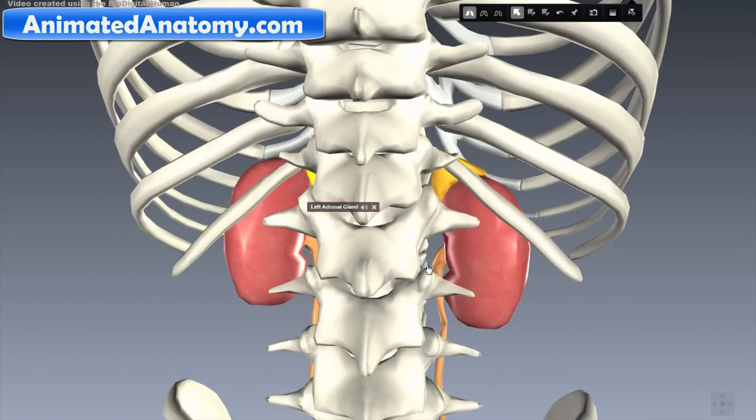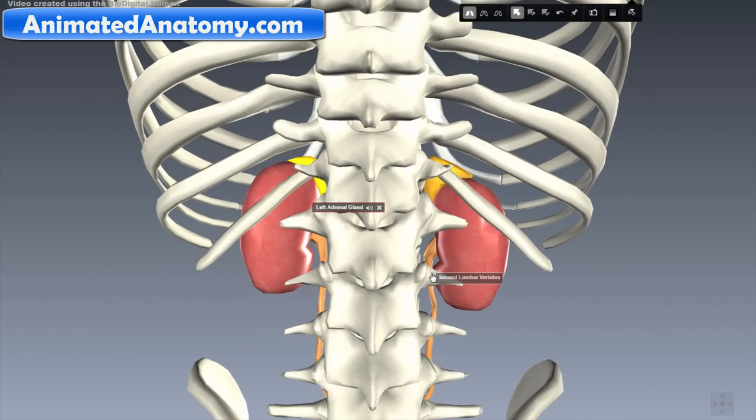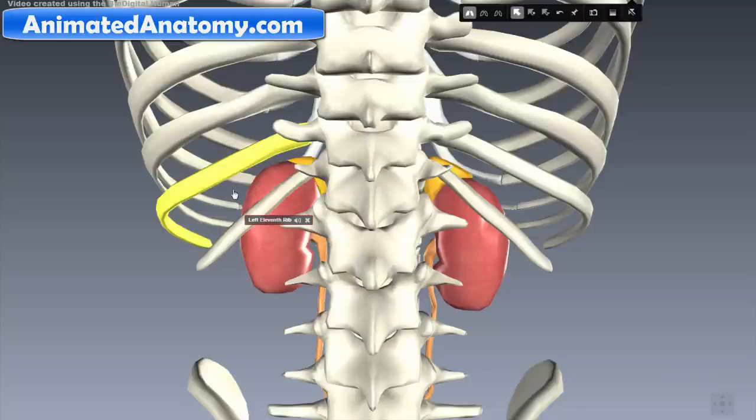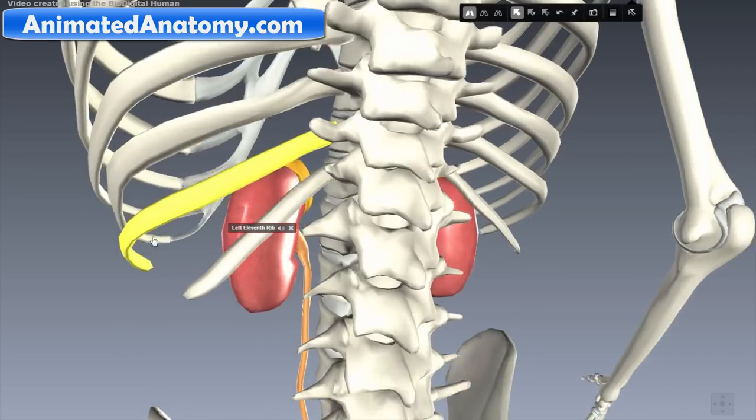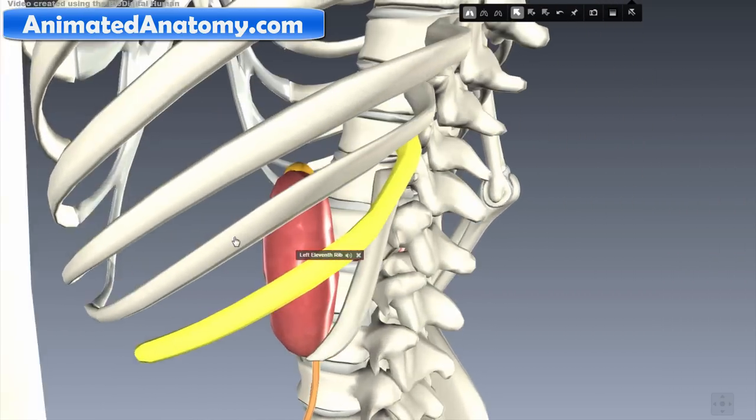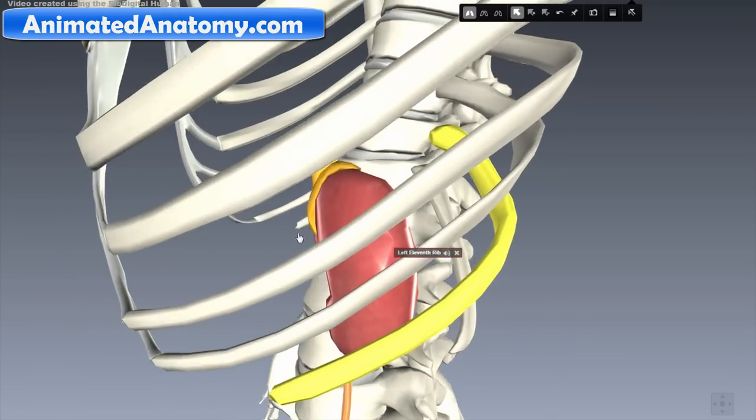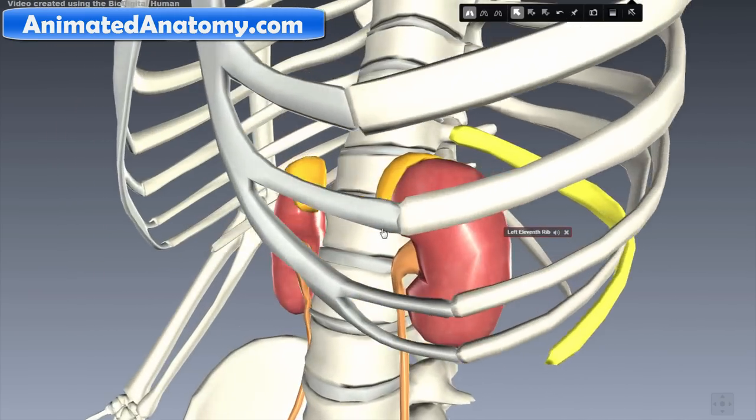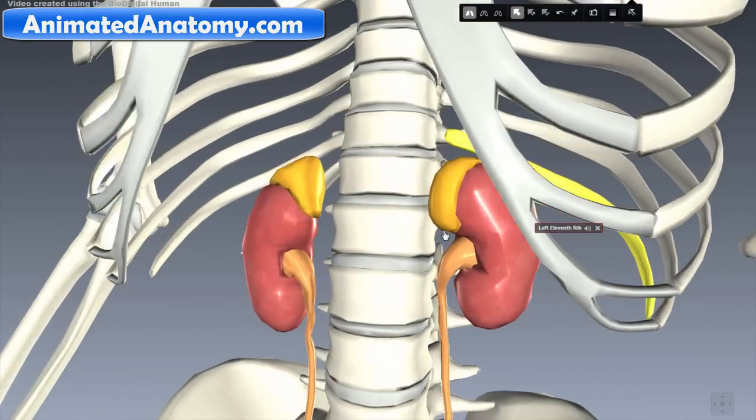If you look from this perspective you will notice that the upper parts of kidneys are somewhat protected by the twelfth and eleventh rib. Each adult kidney weighs between 125 and 170 grams in males and between 115 and 155 grams in females.